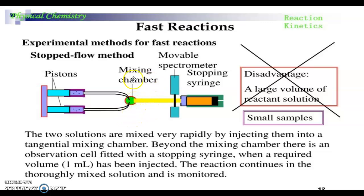The two solutions are mixed very rapidly by injecting them into a tangential mixing chamber. Beyond the mixing chamber there is an observation cell fitted with a stopping syringe. A required volume, that is at a time we are adding 1 mL of reactants, has been injected into the mixing chamber. The reaction continues in the thoroughly mixed solution and it is monitored, and we can study the rate of reaction of these fast reactions. This is the stopped flow method.